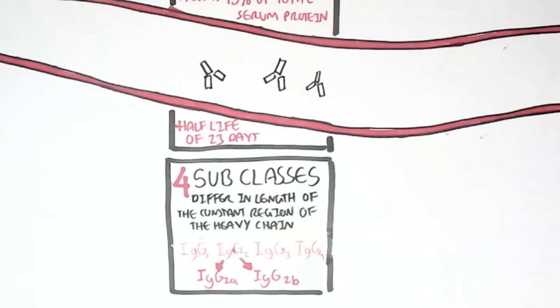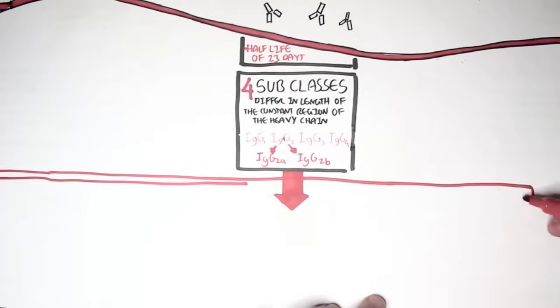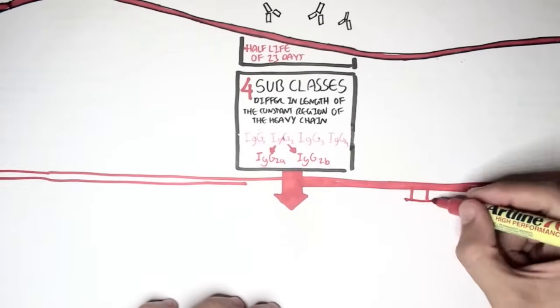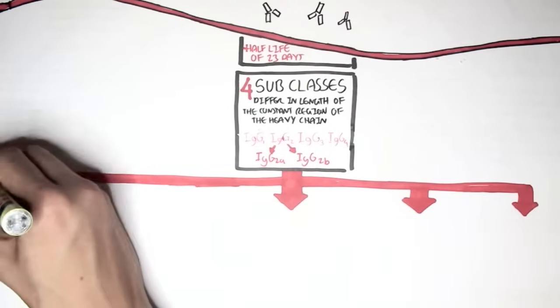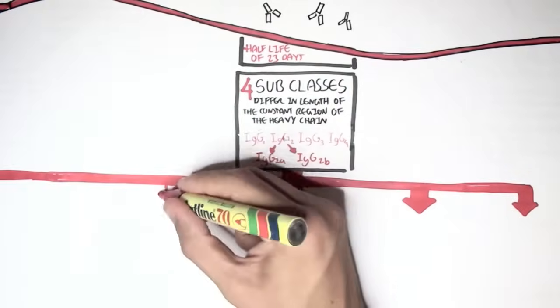So now, let us see what IgG does in the body and how it helps the body fight infection, fight pathogens. And we're focusing on IgG also and its functions, because some of the functions of IgG are shared by other antibody classes, such as IgM and IgD.